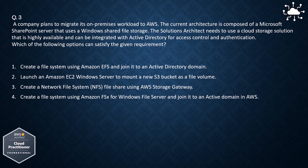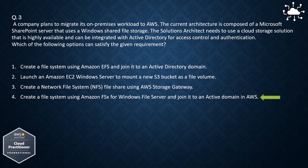Option 1: Create a file system using Amazon EFS and join it to an Active Directory domain. Option 2: Launch an Amazon EC2 Windows server to mount a new S3 bucket as a file volume. Option 3: Create a network file system (NFS) file share using AWS Storage Gateway. Option 4: Create a file system using Amazon FSx for Windows File Server and join it to an Active Directory domain in AWS. The correct answer is Option 4: Create a file system using Amazon FSx for Windows File Server and join it to an Active Directory domain in AWS.